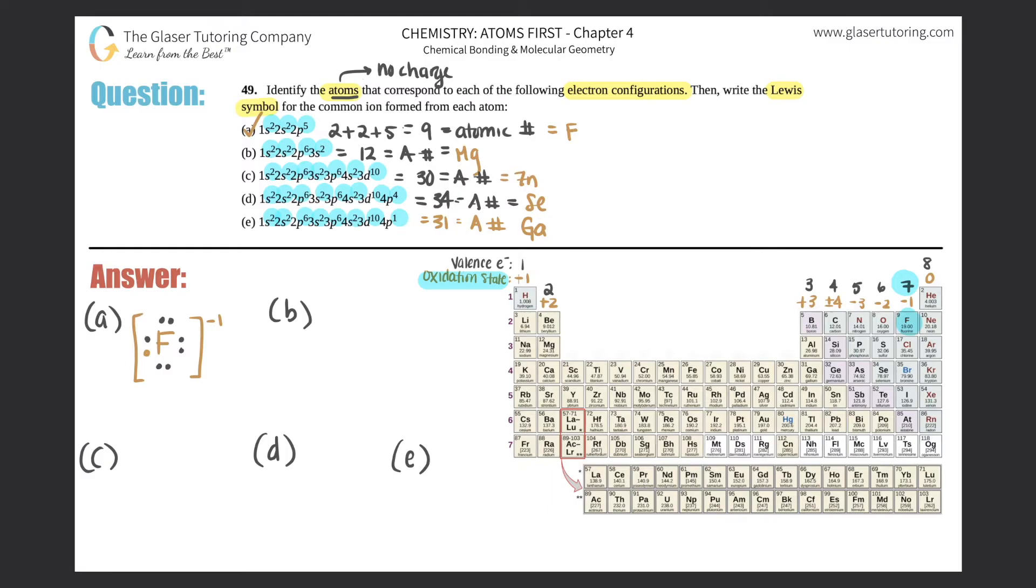And when it is the ion, all you got to do is just box that off and just say the charge negative one. And that would be the answer for a. So it was F and now it turned into F minus one, which is the Lewis symbol. So you have to basically give two answers.